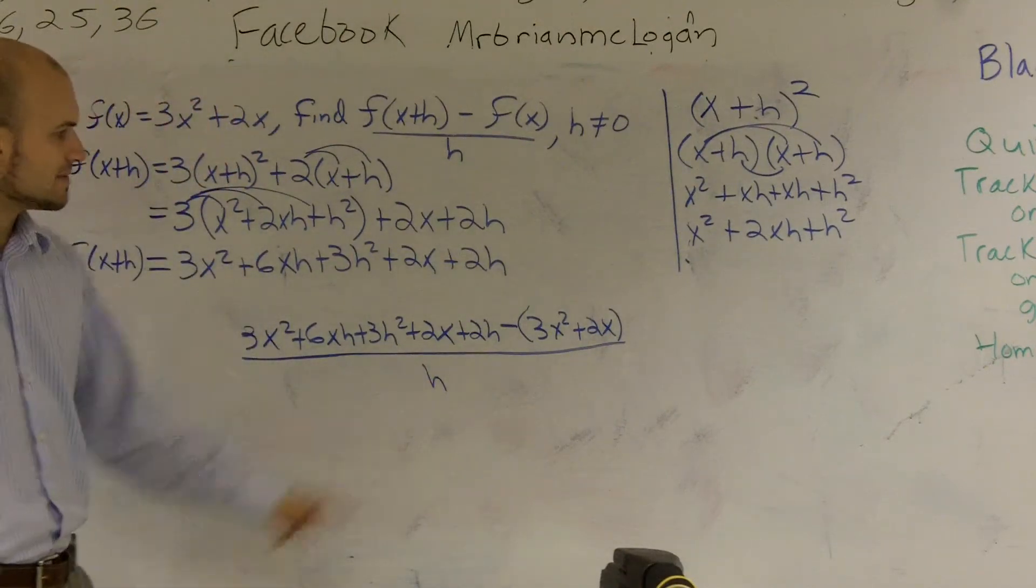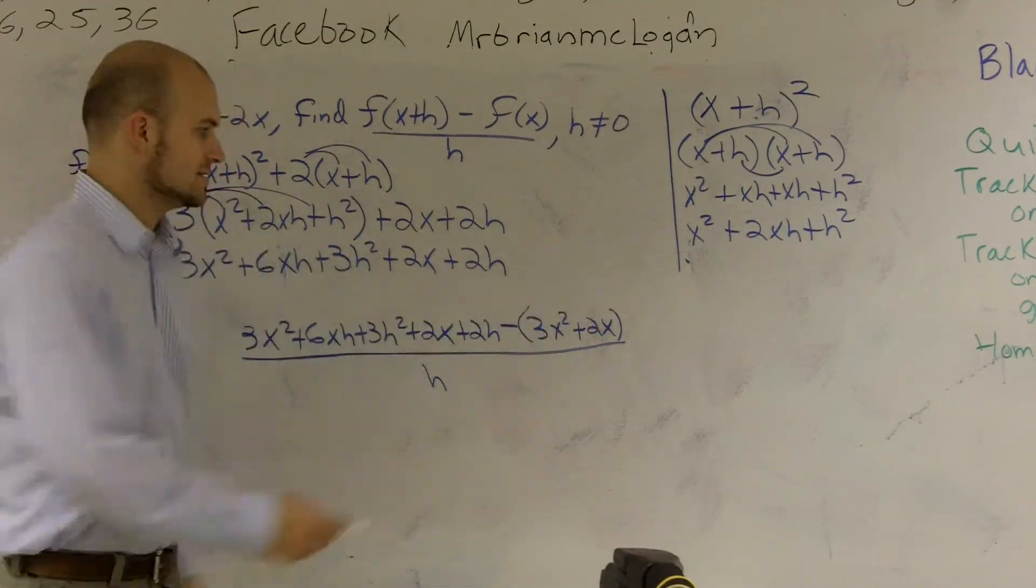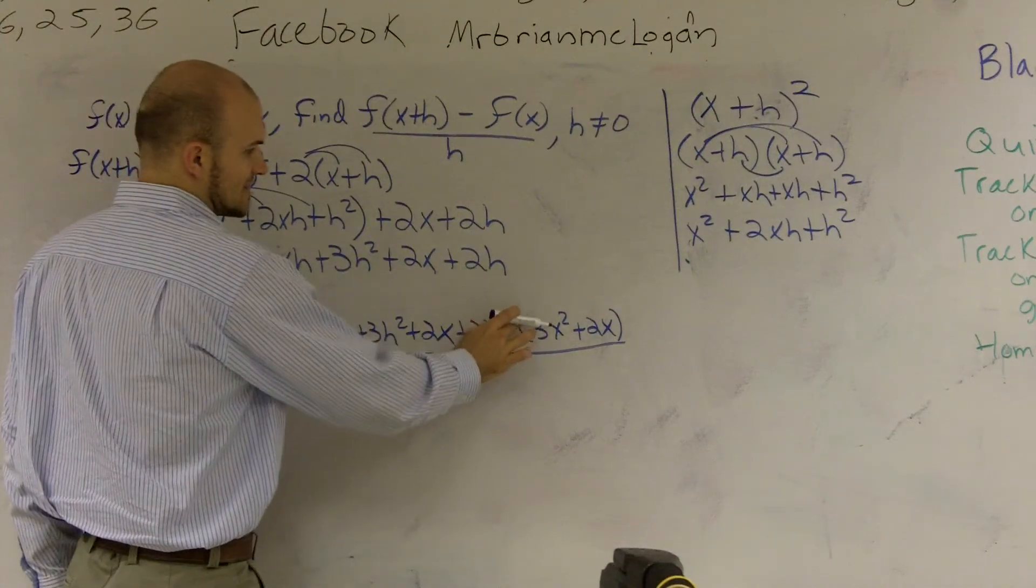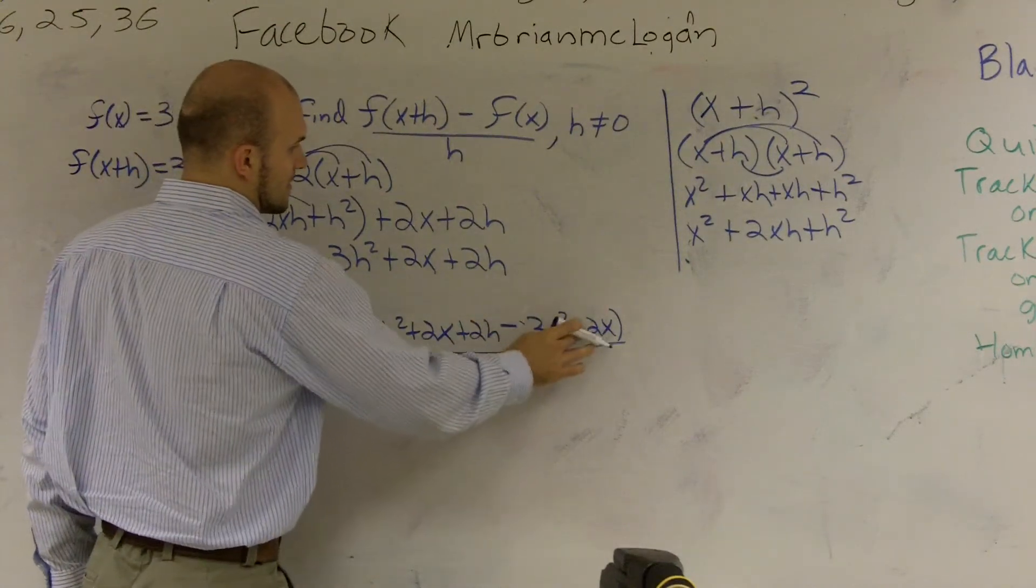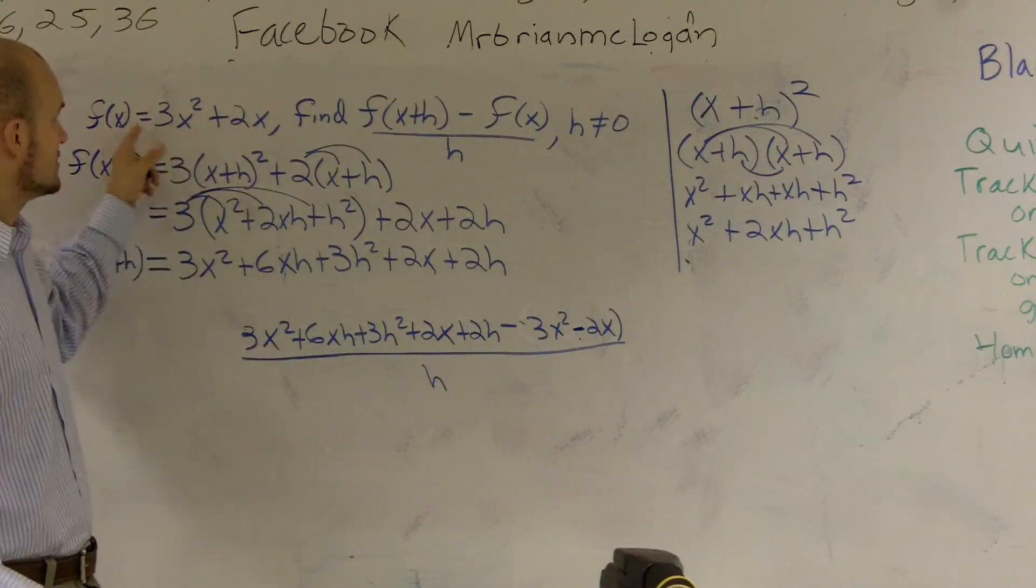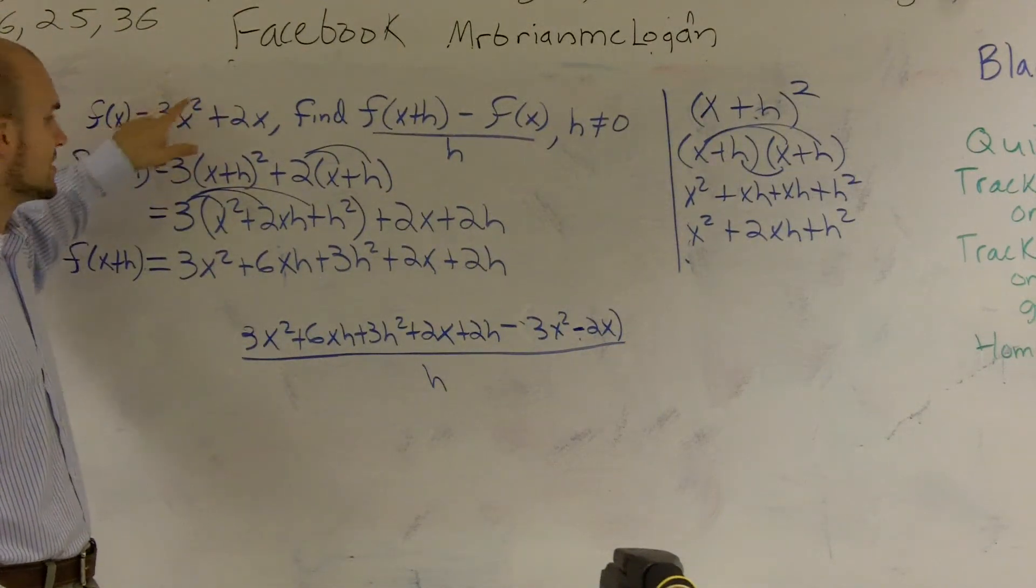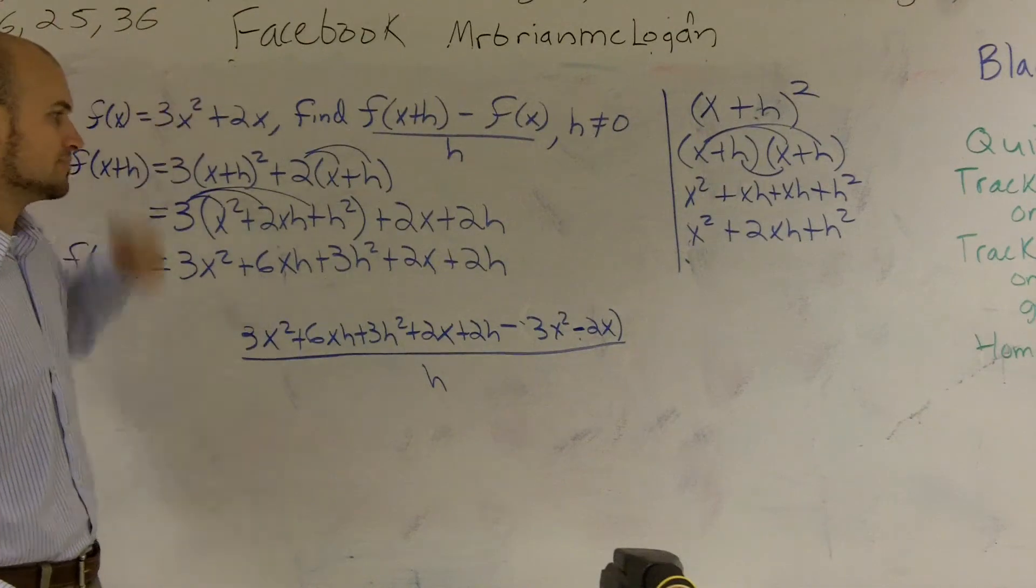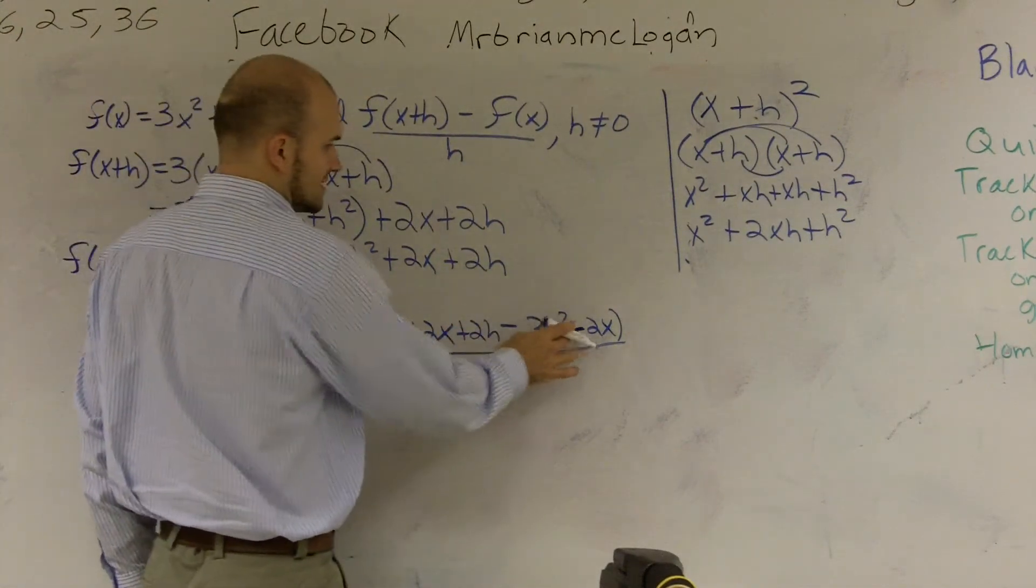$(3x^2 + 6xh + 3h^2 + 2x + 2h) - f(x)$ all over $h$. Now, there's one thing you remember. Since I'm subtracting the $3x^2$ and the $2x$, I can distribute this negative sign. So I can make this a negative, and I'll make that a negative. Because remember, you're subtracting the whole thing. So you're not just subtracting the $3x^2$. You're subtracting both of them. So they're both going to be the opposite sign, which would be negative in this case.